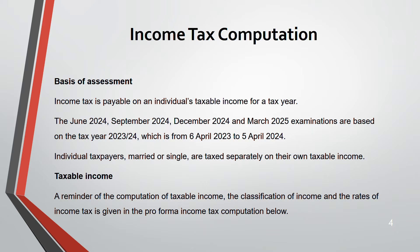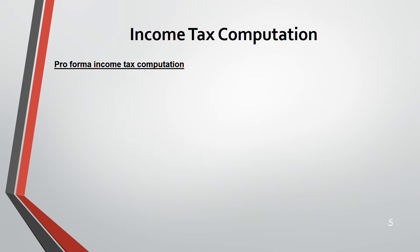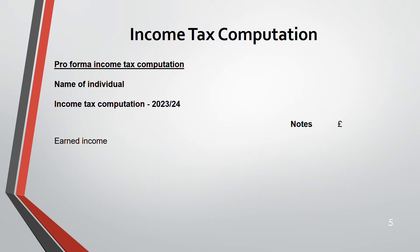You will be presented with a pro forma income tax computation where you classify your income and apply the rates. You cannot write all incomes as one aggregate figure — you must classify them. Write a proper heading 'Income Tax Computation' with the year 2023-24, and keep a notes column. Under earned income, you have employment income, trading profit, and other earned income.